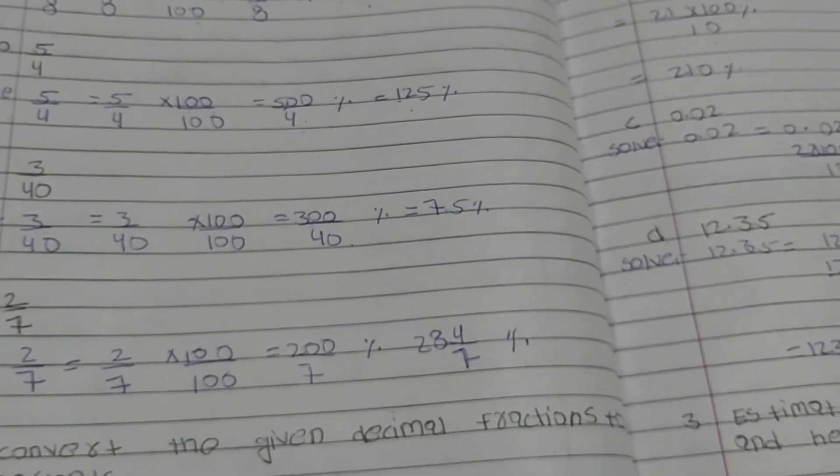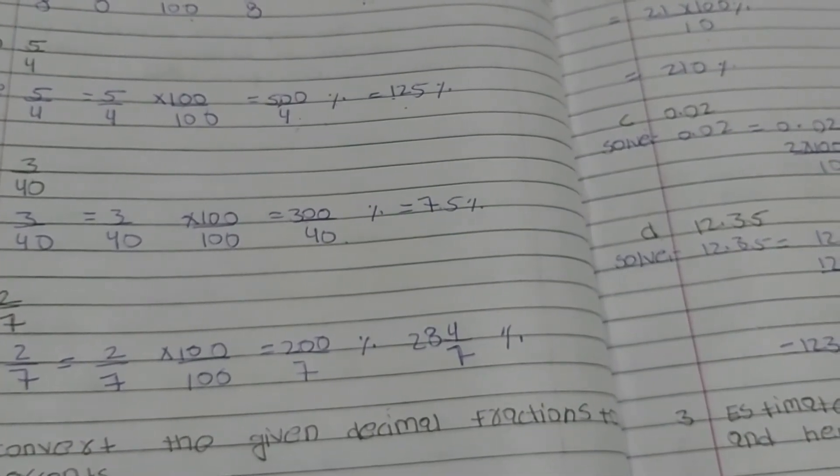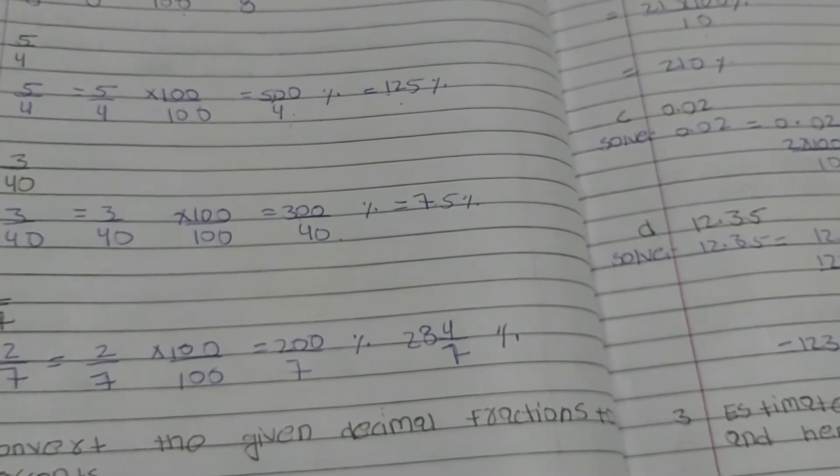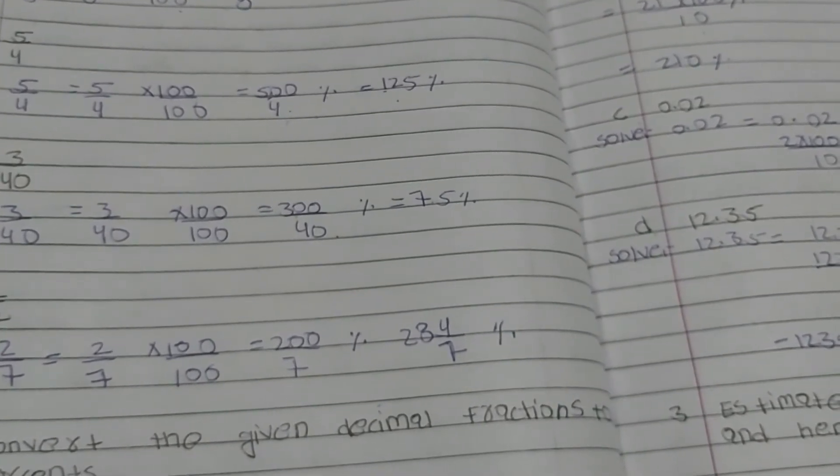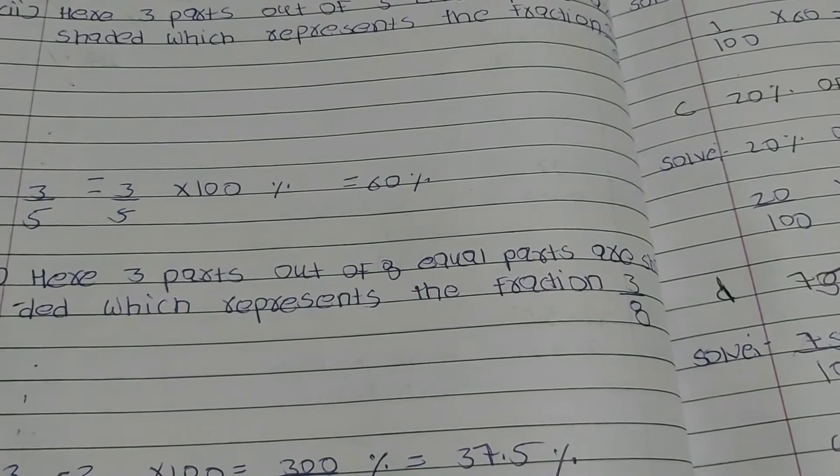We need to write the ratios in the form of fractions and then compare them by converting them to like fractions. If these like fractions are equal, we can say the ratios are equivalent.